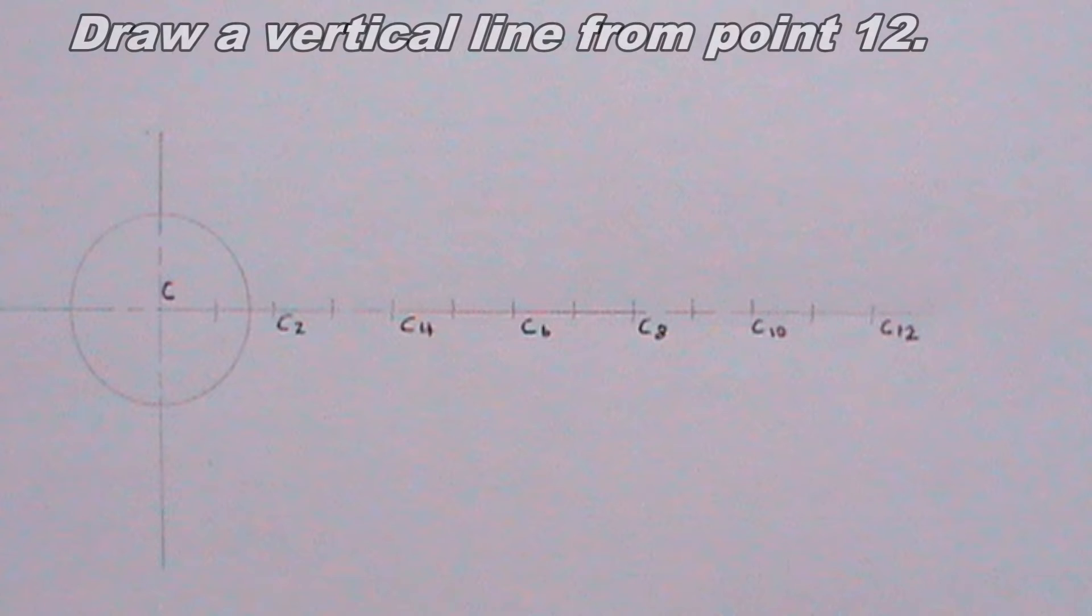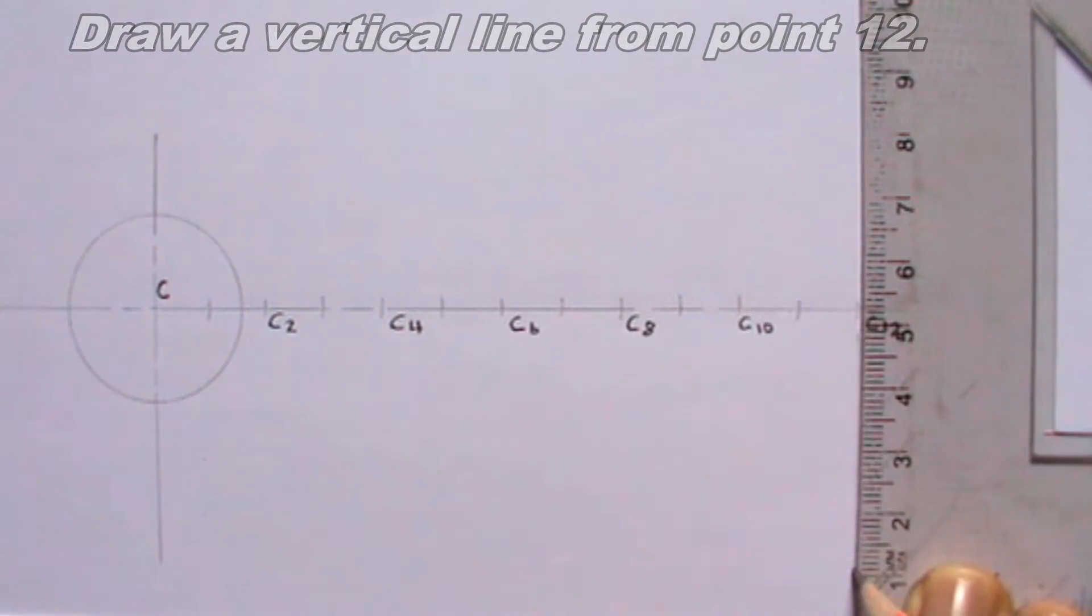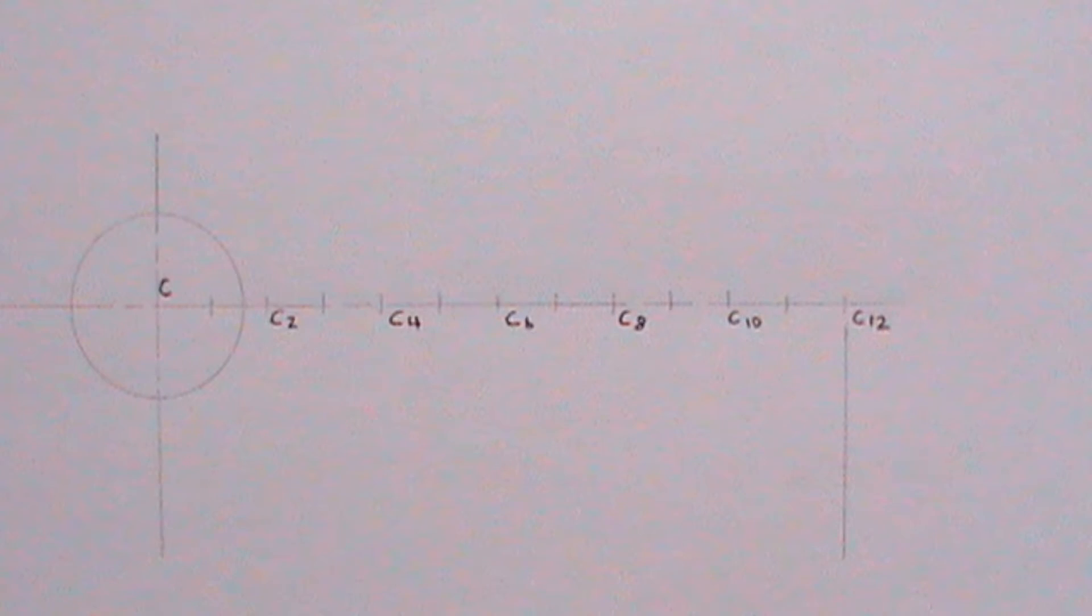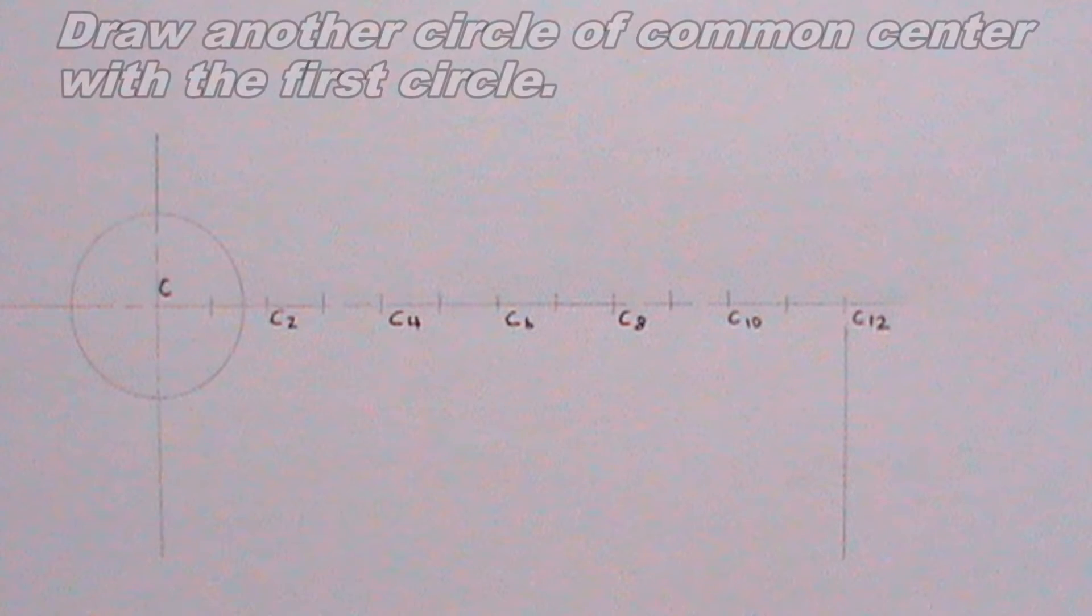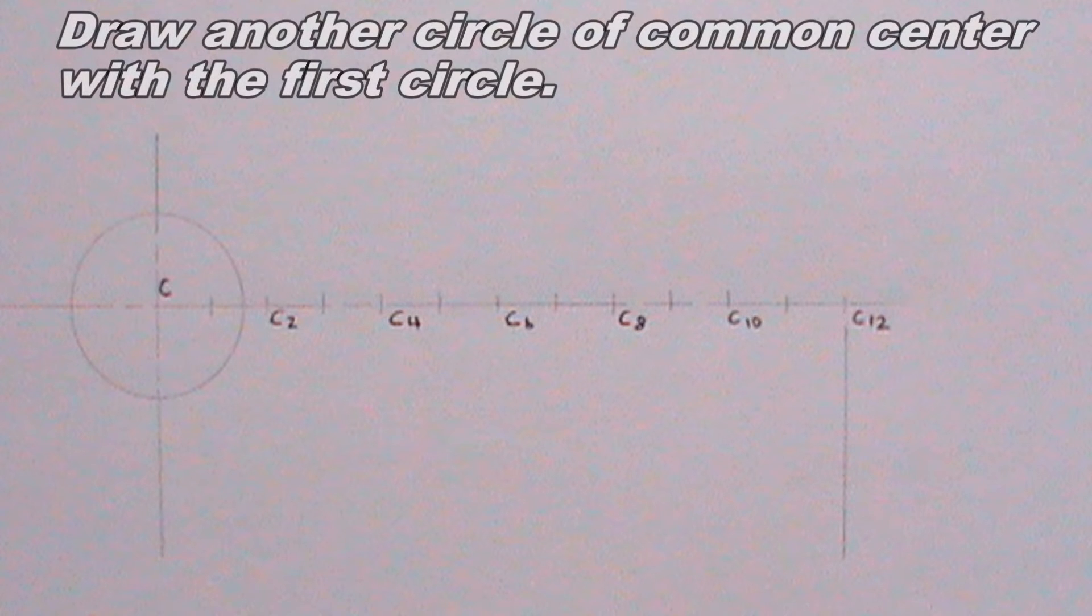Next, I will draw a vertical line from point 12. Next, I will draw another circle. This circle should have a common center with the first circle. The radius of this circle should be 20 mm.